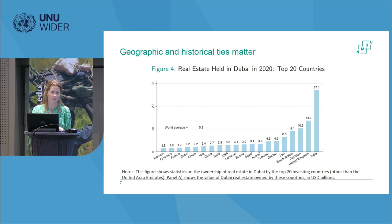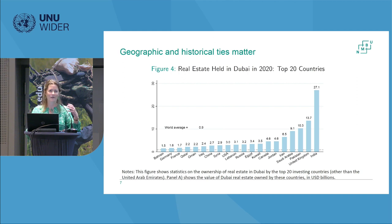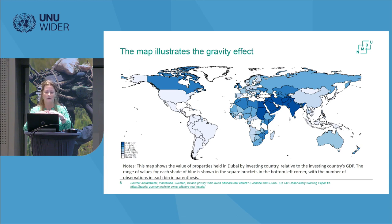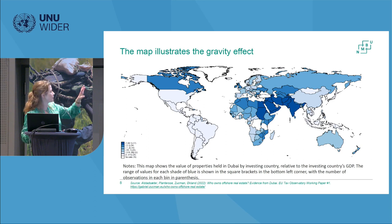India is basically the biggest number, partly due to guest workers. The UK also features prominently, reflecting geographical proximity and historical ties with Dubai. We also see that Argentinians use countries close to them, illustrating the gravity effect - you tend to invest close to home. We've seen this in earlier work with Nielsen and Gabriel on financial assets in Switzerland: you basically go to a tax haven that's easier and closer to home. This gravity effect in hidden wealth appears across different sources and different asset types. The darker blue on the map illustrates investments in Dubai as a percentage of different countries' GDP.